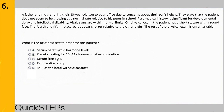Question six: a father and mother bring their 13-year-old son to your office due to concerns about his height — he does not seem to be growing at a normal rate relative to his peers. Past medical history is significant for developmental delay and intellectual disability. On physical exam the patient has short stature with a round face; the fourth and fifth metacarpals appear shorter relative to the other digits. What is the next best test to order? A) serum PTH levels; B) genetic testing for 15q11 chromosomal microdeletion; C) serum free T3 and T4; D) echocardiography; or E) MRI of the head without contrast. This is probably the most challenging question in this set.